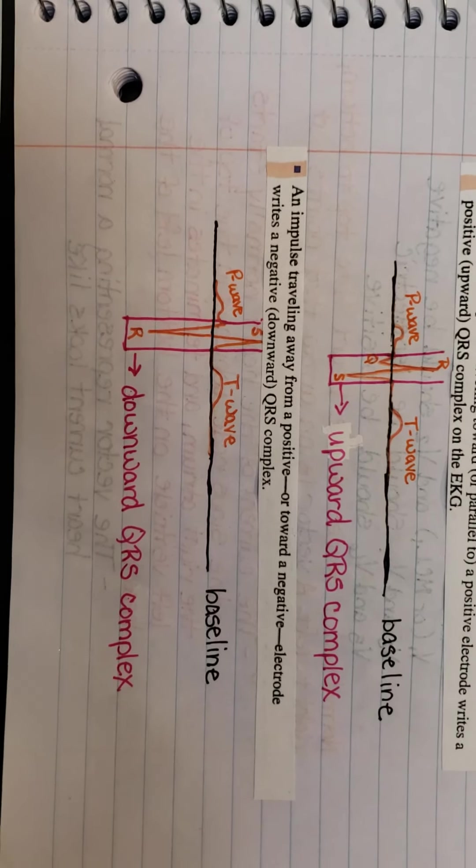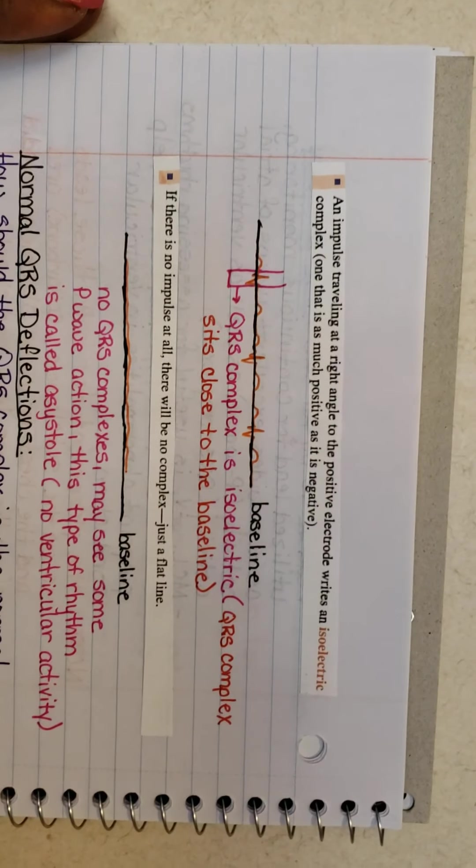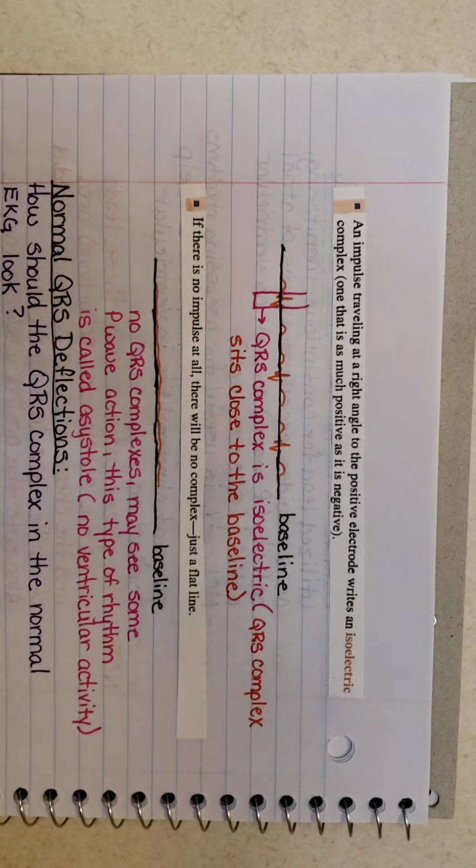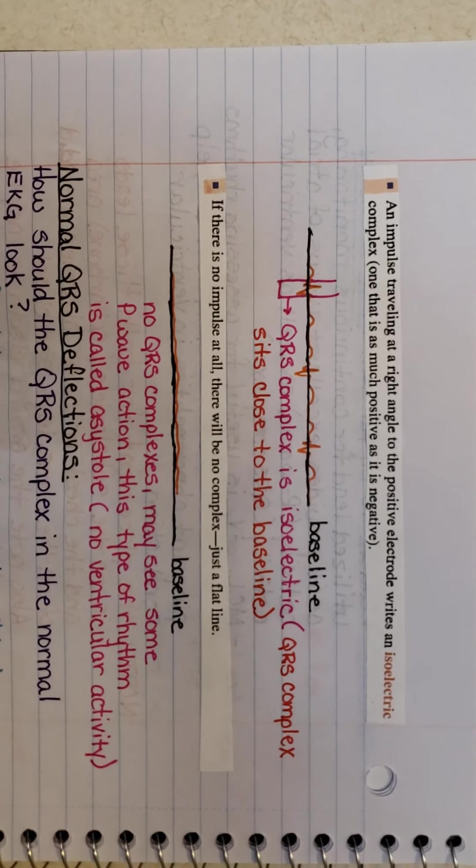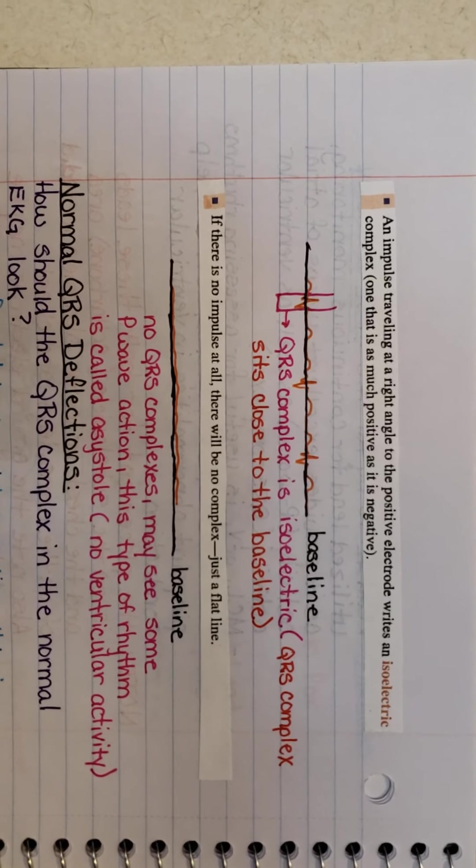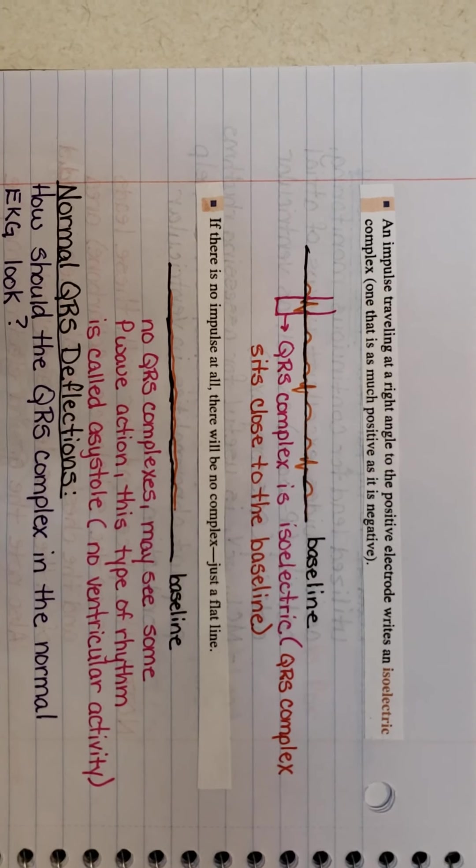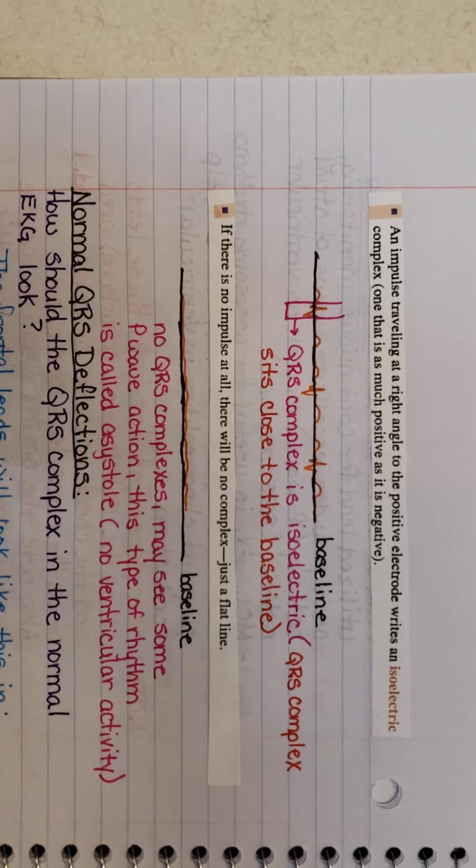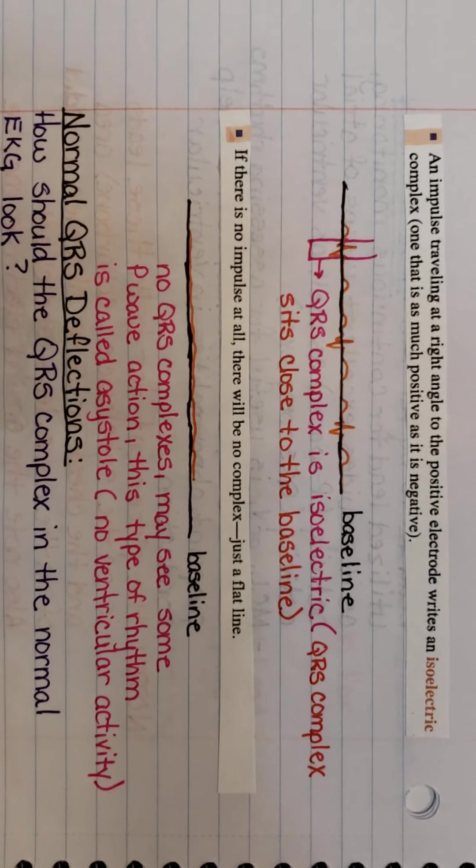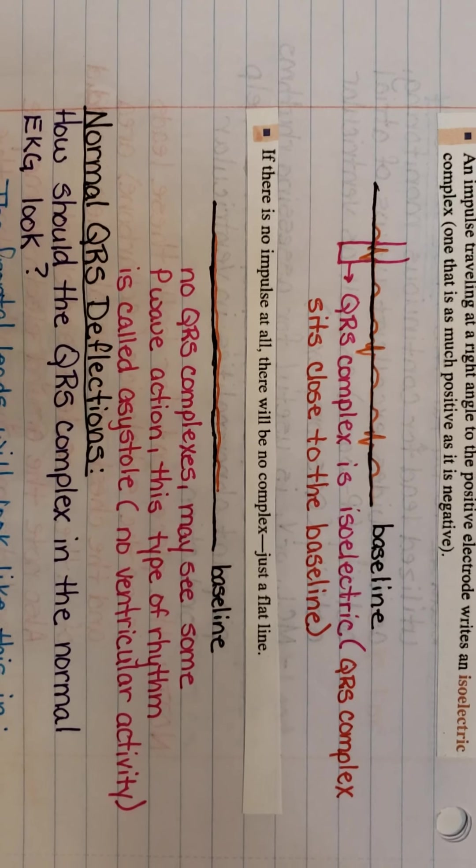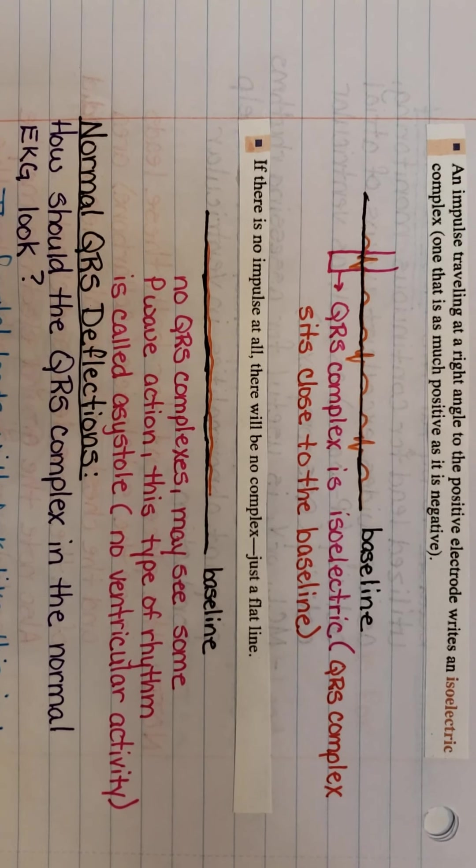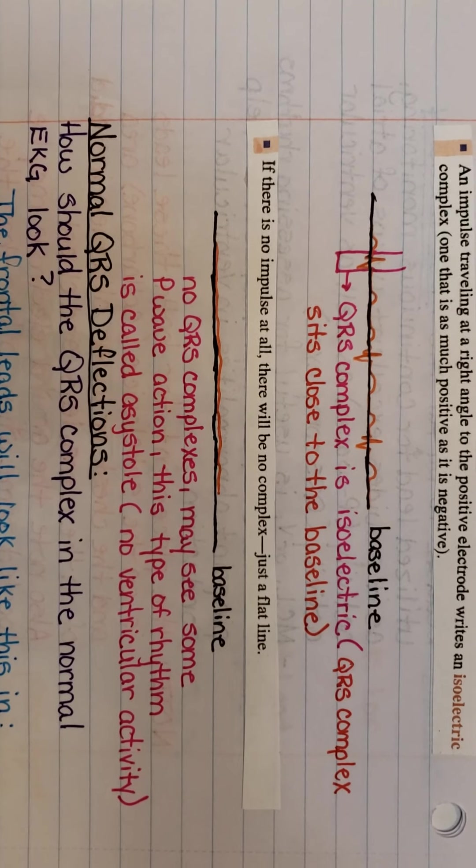If an impulse travels away from a positive or towards a negative electrode, it writes a negative or downward QRS. As you can see from my example, you have your P that's negative going downward, your S is now up and your T. Our next truth is an impulse traveling at a right angle to a positive electrode writes an isoelectric complex, one that is as much positive as it is negative. They're neither negative or positive. They're kind of in between.